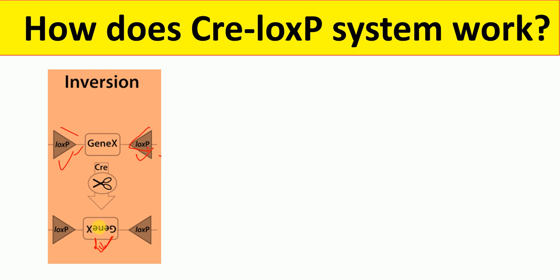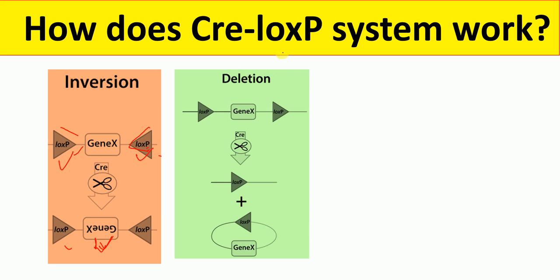Another type of event is deletion. Deletion occurs when the two LoxP sites are present on the same strand and the sites are also in the same direction — not facing each other, but oriented the same way. In that case, the sequence between the LoxP sites — for example gene X — is excised as a circular piece of DNA and thereby inactivated. So deletion occurs when LoxP sites are on the same strand and facing the same direction.